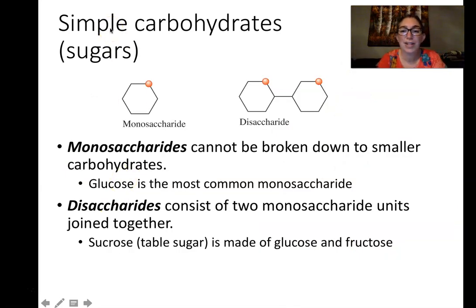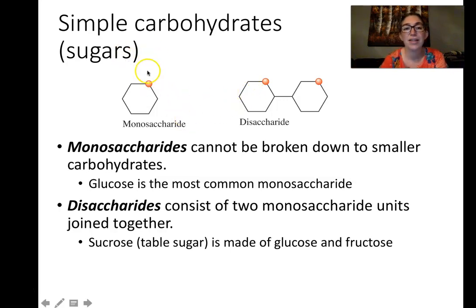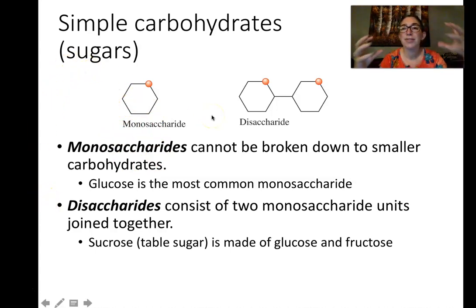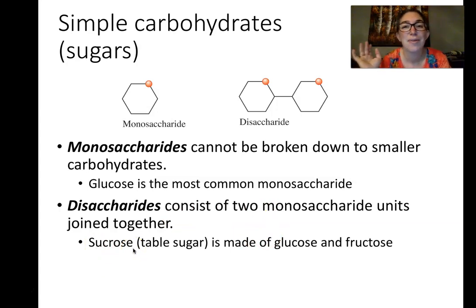The simple carbohydrates are the monosaccharides and the disaccharides — mono meaning one, di meaning two. Monosaccharides have one ring and disaccharides have two rings. Both are commonly referred to as sugars. The most common monosaccharide on the planet is glucose, since that's the fundamental one made in photosynthesis. Disaccharides are two monosaccharides chemically bonded together. One you're probably most familiar with is sucrose, which is table sugar — when you get Dixie crystals for your coffee, that is basically just pure sucrose.